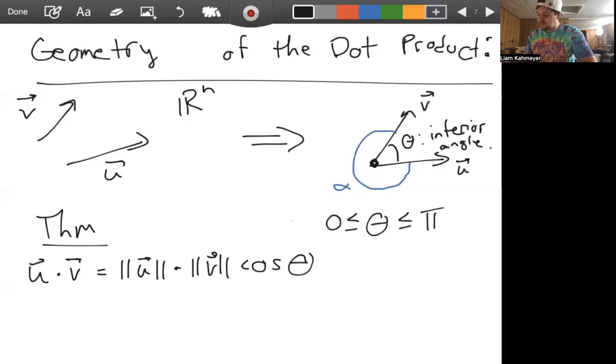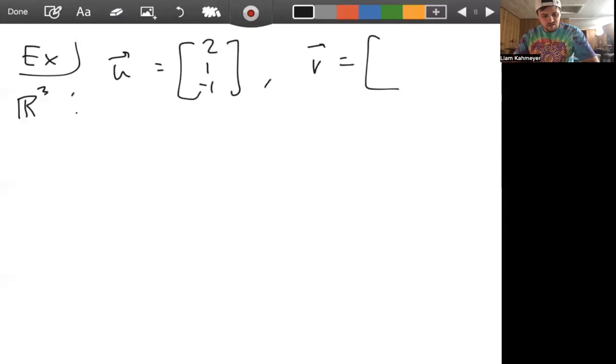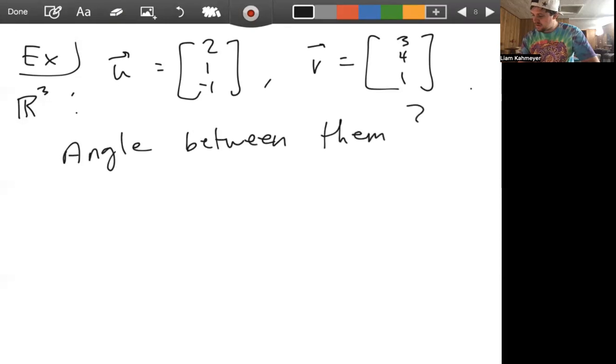So let's just do a little example here. Let's say U, so we're working in R^3 now. Let's say U is the vector [2, 1, -1] and V is the vector [3, 4, 1]. And we want the angle between them.